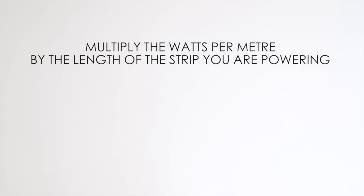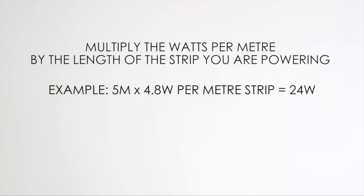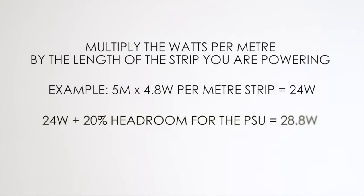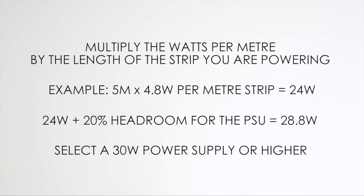To calculate how much power in watts you need simply multiply the watts per metre of the strip by the length of strip you are powering. So if you are powering 5 metres of 4.8 watts per metre strip just multiply 5 metres by 4.8 watts giving you 24 watts. Then adding the 20% headroom onto 24 watts gives you 28.8 watts. So a power supply rated at 30 watts or 40 watts would be perfect.